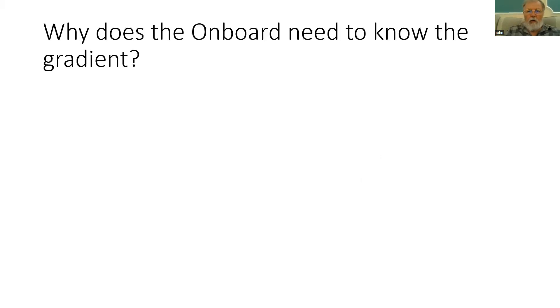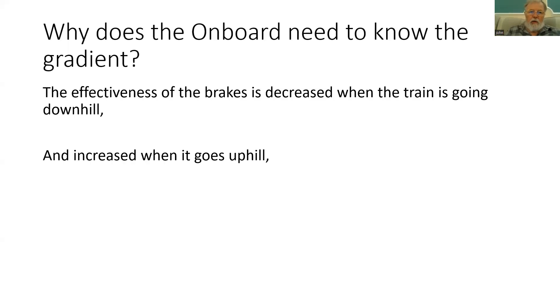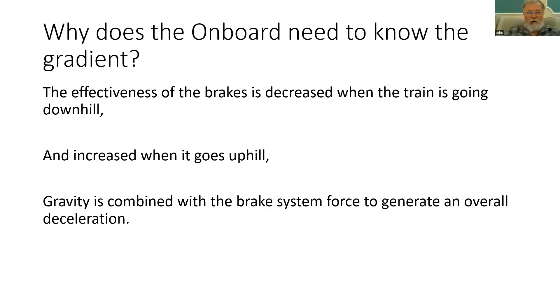It's time to have a look at gradients. What information does the onboard need? Let's start with the basic question: why does it need the information? If you have brakes on a train, their effectiveness is decreased when the train is going downhill - the braking distance will increase. Similarly, the brakes are more effective when going uphill and you'll stop in a shorter distance. So gravity is combined with the brake system force, and that generates the overall deceleration.